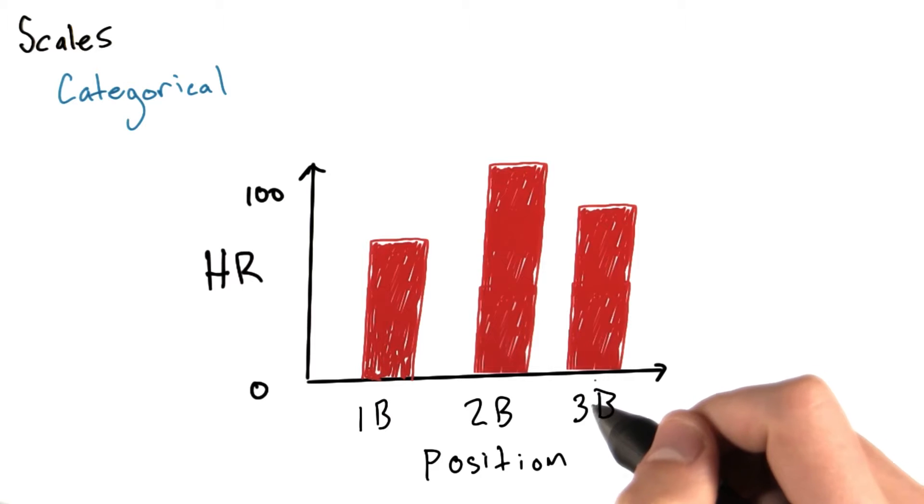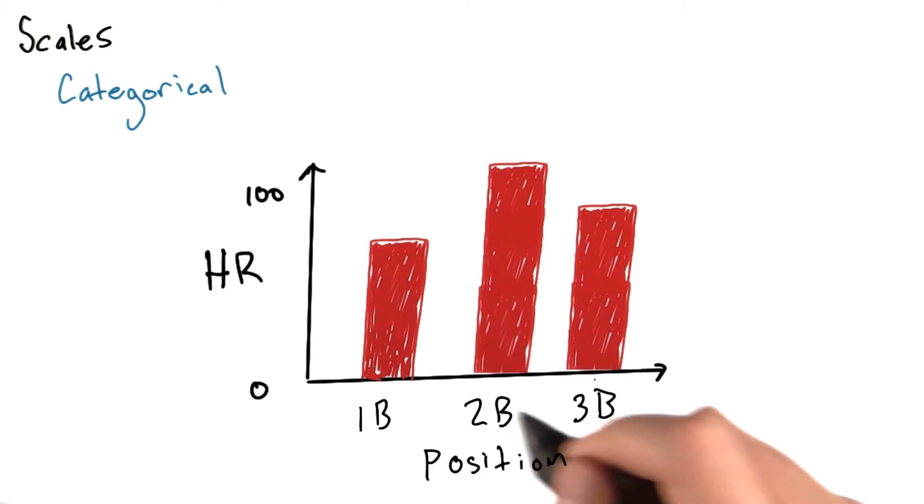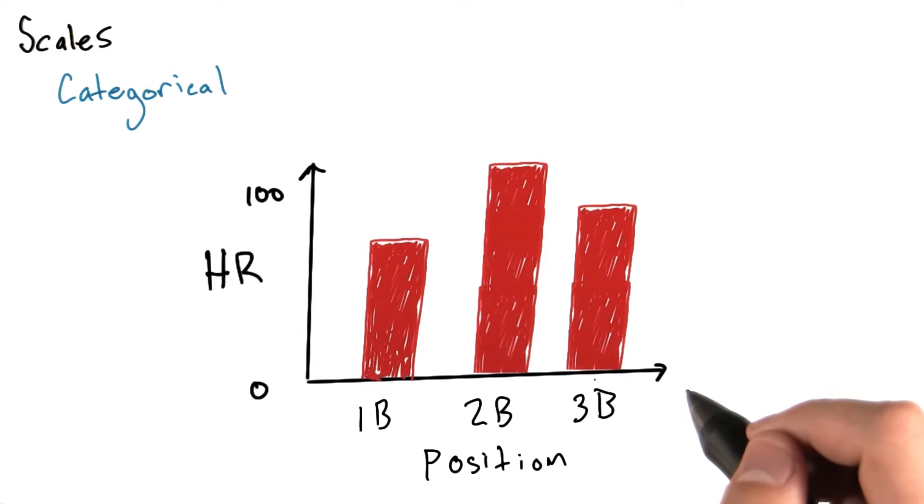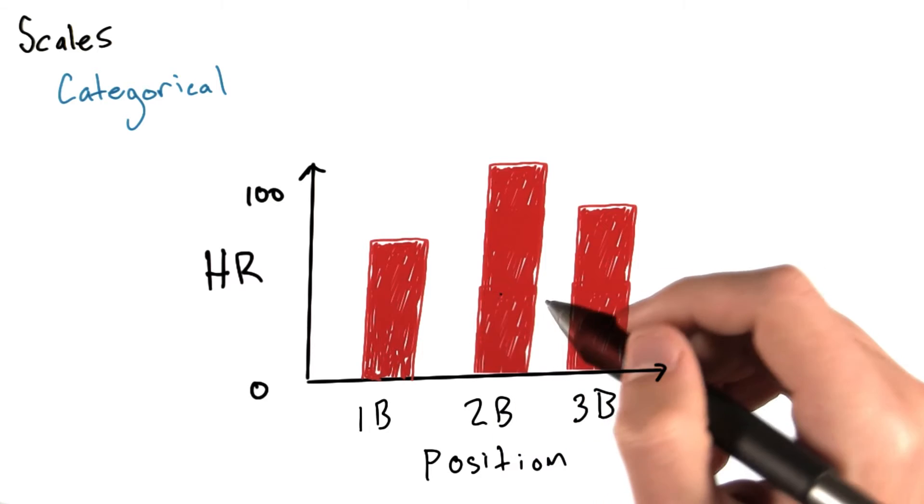but you can imagine that if we had ordinal data, we'd want these categories represented in the order that the ordinal data suggests. That'll make it easier to compare and contrast your bars, or whatever encoding you've chosen to represent your data.